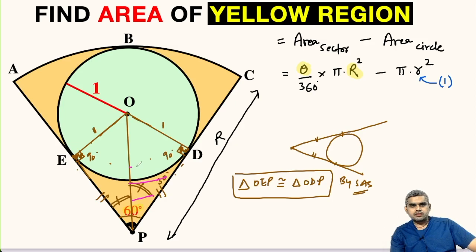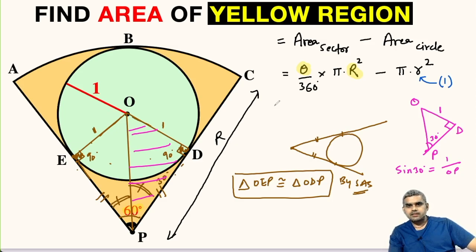Let us focus in this triangle, that is OPD. Let me draw it outside. This point is P, this is OD and this point is O and it is 90 degree. OD is 1 unit, this angle is 30 degree. We know that sin 30 degree will be equal to 1 upon OP. Sin 30 is half equals 1 upon OP. From here we get OP equals 2.